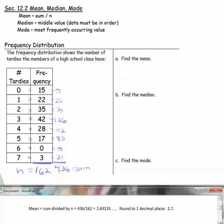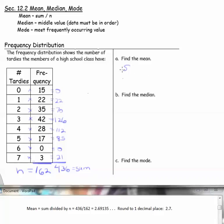To find the mean, then, we need to take the sum divided by n, which is 436 divided by 162, or 2.69135. For mean, our rule of thumb will be that we'll round to one decimal place, and that will be 2.7.